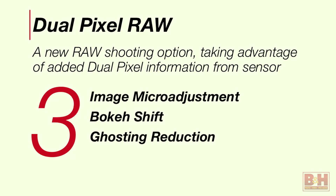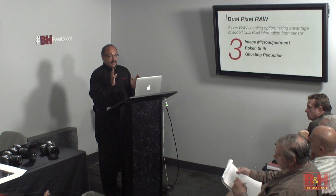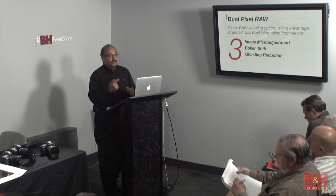If you shoot Dual Pixel RAW and process in Canon's Digital Photo Professional software — which comes with the camera — you have three processing options. You can do an image micro adjustment, a bokeh shift, or ghosting reduction. The effects are subtle — let me repeat that: the effects are subtle. They're not night-and-day changes, not like using the clone tool in Photoshop, but they can potentially be useful in some situations.